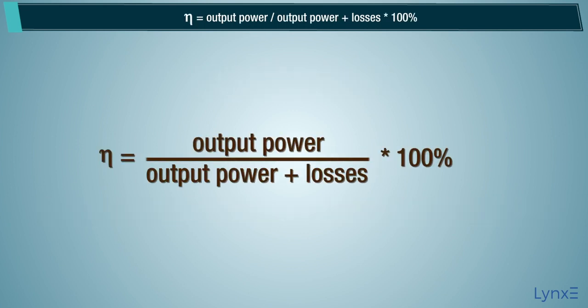The efficiency of transformer is simply given as: eta equals output power divided by output power plus losses, multiplied by 100%.